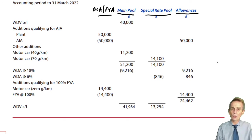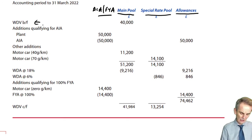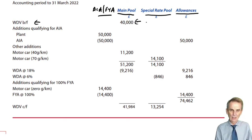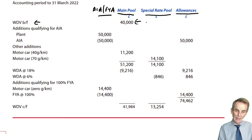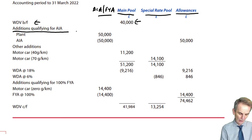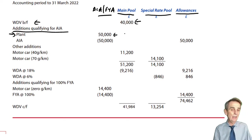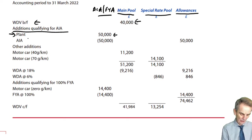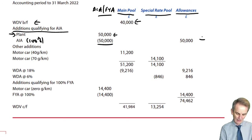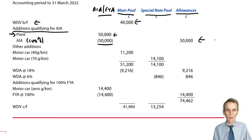Having set up the relevant columns from analysing the information in the question, let's get on with recording those transactions. Firstly, the tax written down value brought forward — it's a main pool balance, into the main pool it goes. We then list out those additions that qualify for AIA: simply the plant purchase for £50,000. It's a 12-month period, nowhere near the £1 million limit, so the AIA is 100%. We take the full £50,000 into the allowances column, with no residue left over to go into the main pool.